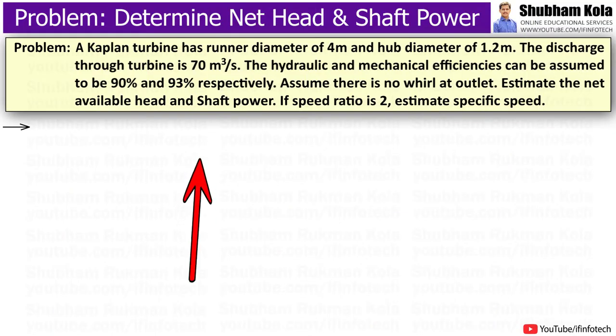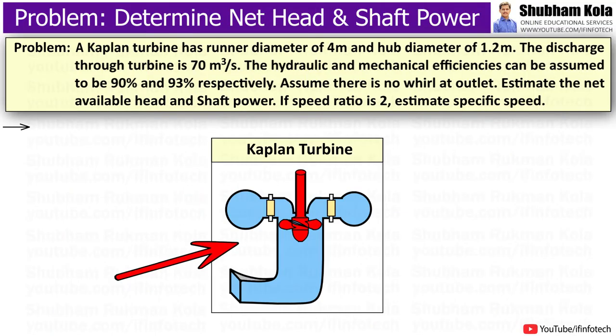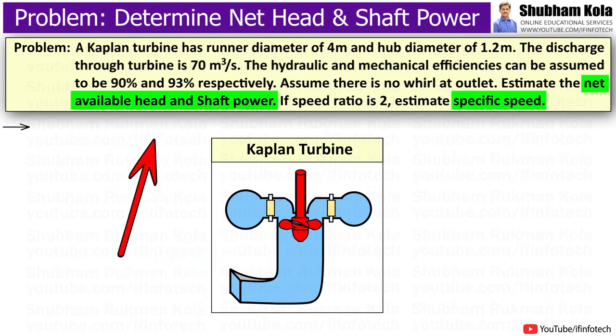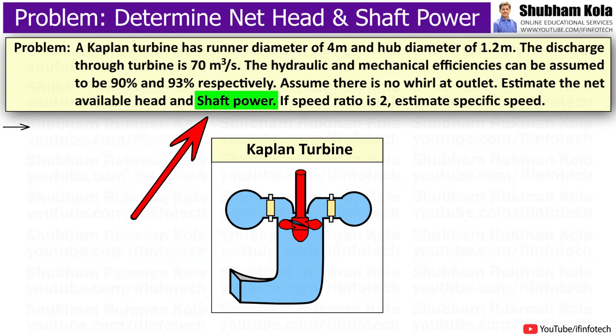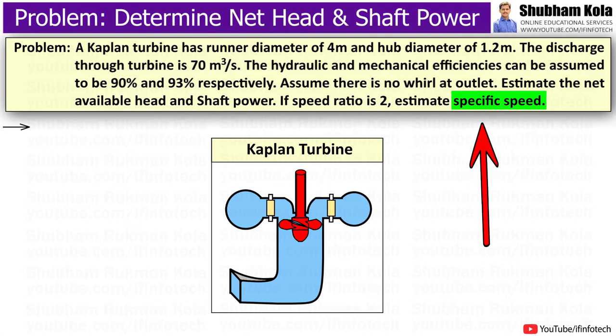In this video, we are going to solve a problem based on a Kaplan turbine, where we will calculate net available head, shaft power, and specific speed of the turbine.